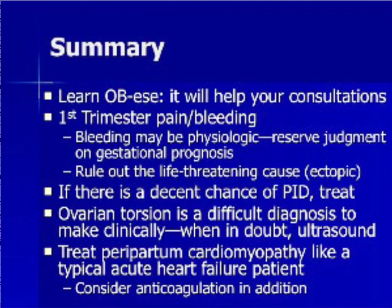In summary: learn OB language as it will help your consultation interactions. Regarding first trimester pain and bleeding, bleeding may be physiologic so reserve judgment on gestational prognosis. The goal of evaluation is to rule out the life-threatening cause, i.e., ectopic pregnancy. If there is a decent chance of pelvic inflammatory disease, treat first and ask questions later. Ovarian torsion is a difficult clinical diagnosis; when in doubt, ultrasound, and if there is high enough clinical suspicion, consider gynecologic consultation to evaluate laparoscopically. Treat peripartum cardiomyopathy like a typical acute heart failure patient, but consider adding systemic anticoagulation due to the increased thrombophilic state.